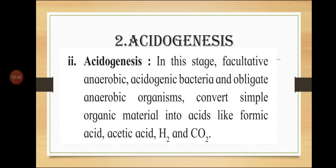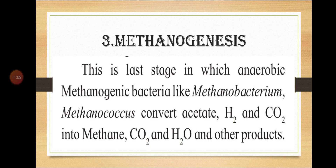The second step is acidogenesis. In this stage, facultative anaerobic acidogenic bacteria and obligate anaerobic organisms convert simple organic material into acids like formic acid, acetic acid, H₂, and CO₂. The third step is methanogenesis, the last stage, in which anaerobic methanogenic bacteria like Methanobacterium and Methanococcus convert acetate, hydrogen, and carbon dioxide into methane, carbon dioxide, and water.